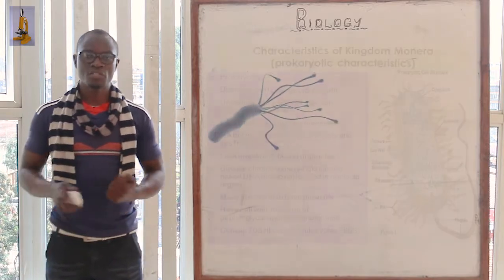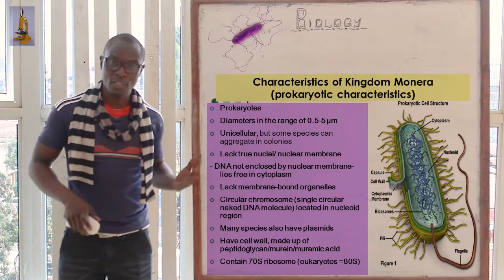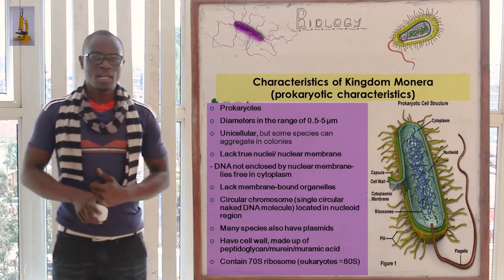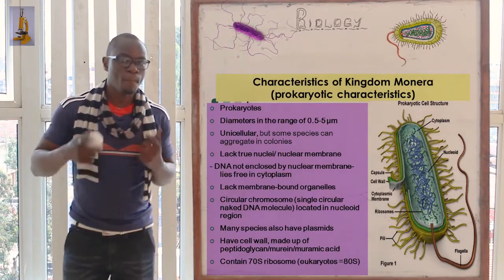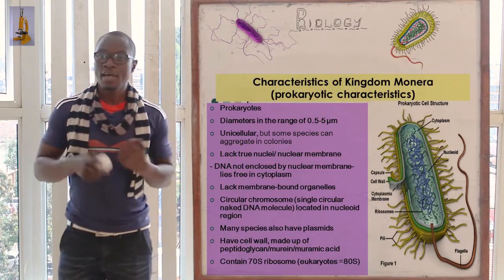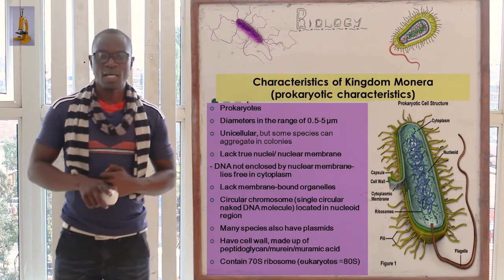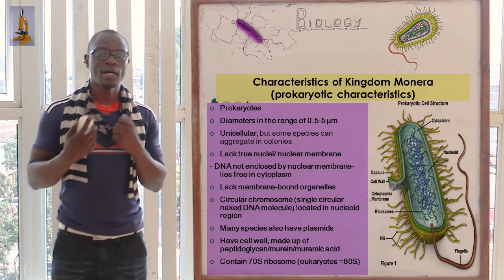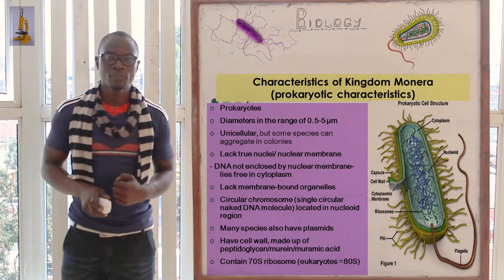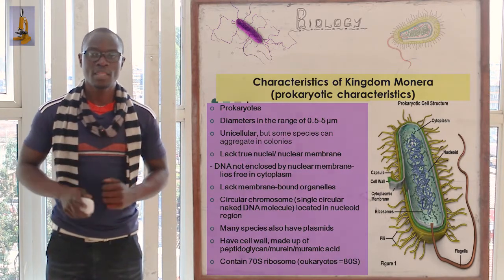Let's look at the first one, which is kingdom Monera. This kingdom can also be called kingdom Prokaryota. These are very small unicellular organisms. They lack a nuclear membrane, hence the name prokaryotic cells and also the name Prokaryota. So these cells are prokaryotic, and this kingdom is mainly comprised of only the bacteria.